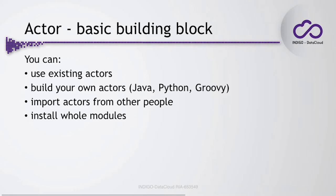There are a few ways you can use actors. First, you can use existing actors — go to the search field, choose the actor, and put it on the canvas. You can build your own actors in Java, Python, Groovy, or whatever language you choose. You can import actors from other people — if somebody saves their actor and provides it to you, you can load and use it in your own computations. This applies to whole workflows too: someone can save an entire workflow, you load it, and you can still run it assuming you have all the required actors. You can also install whole modules provided by the community, which typically contain many field-specific actors.